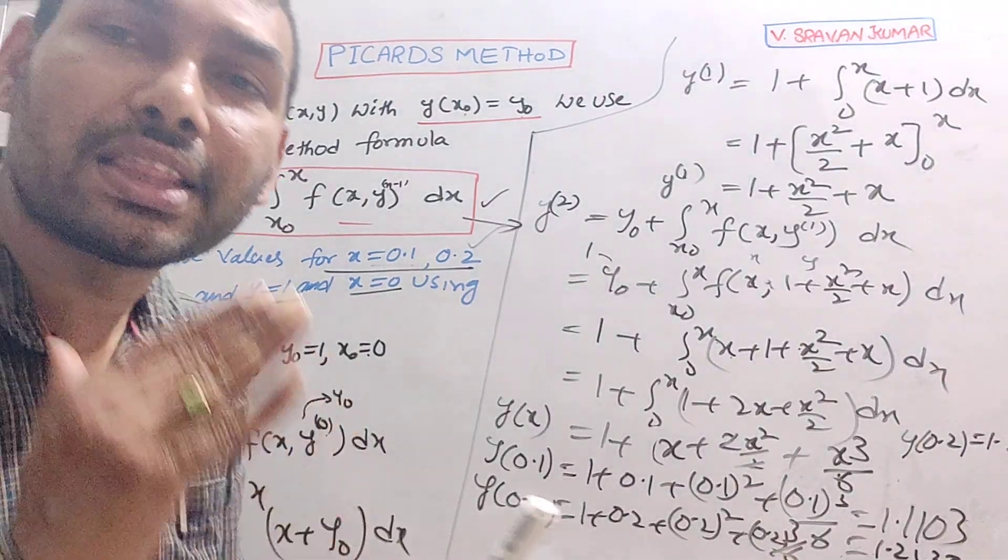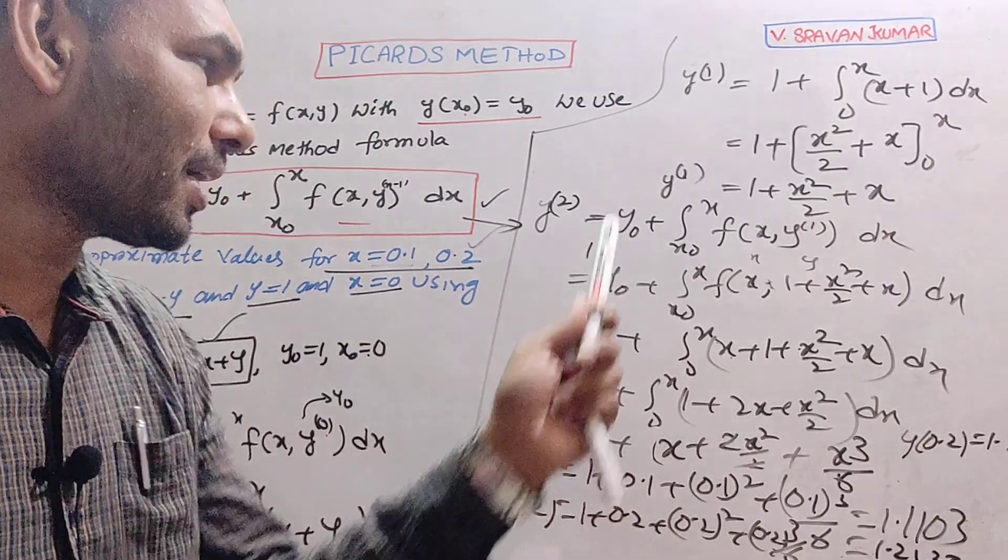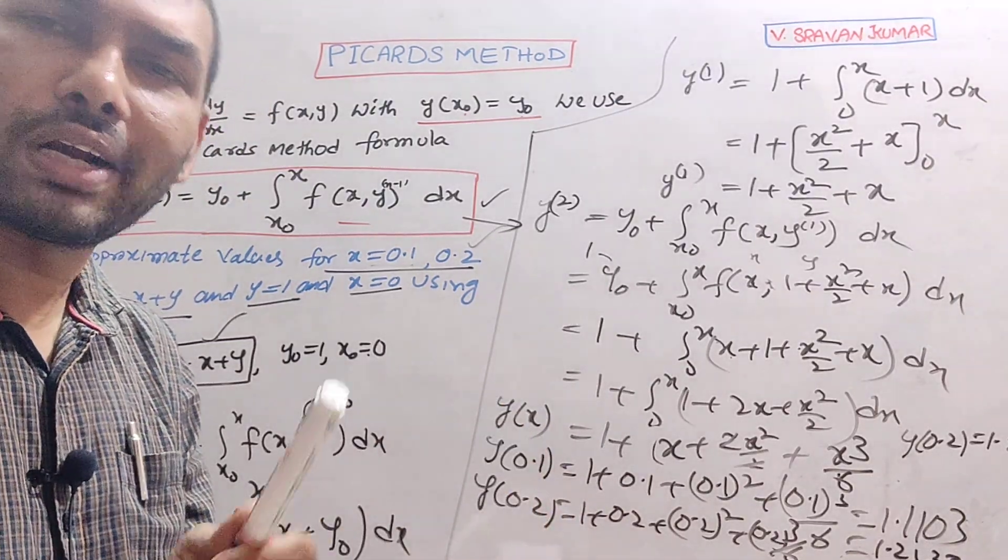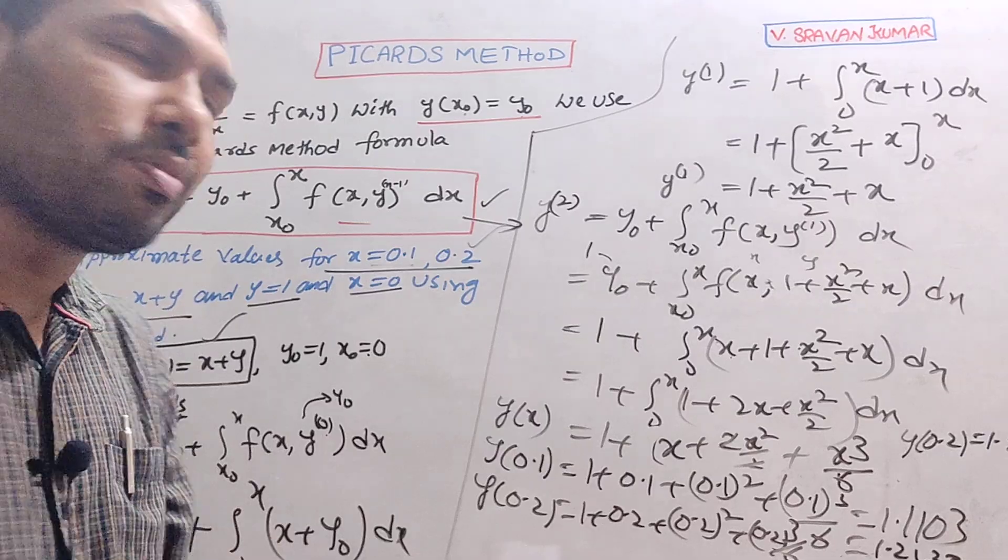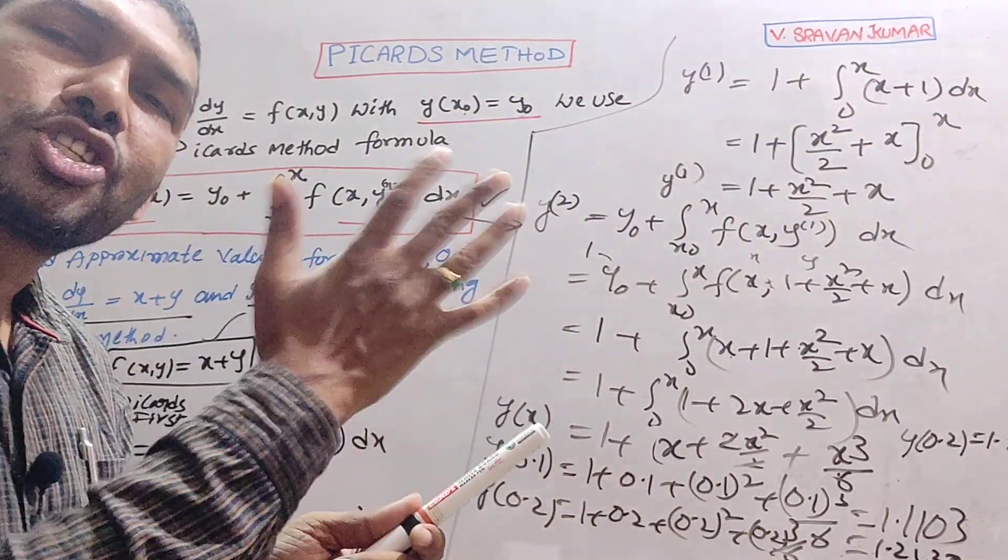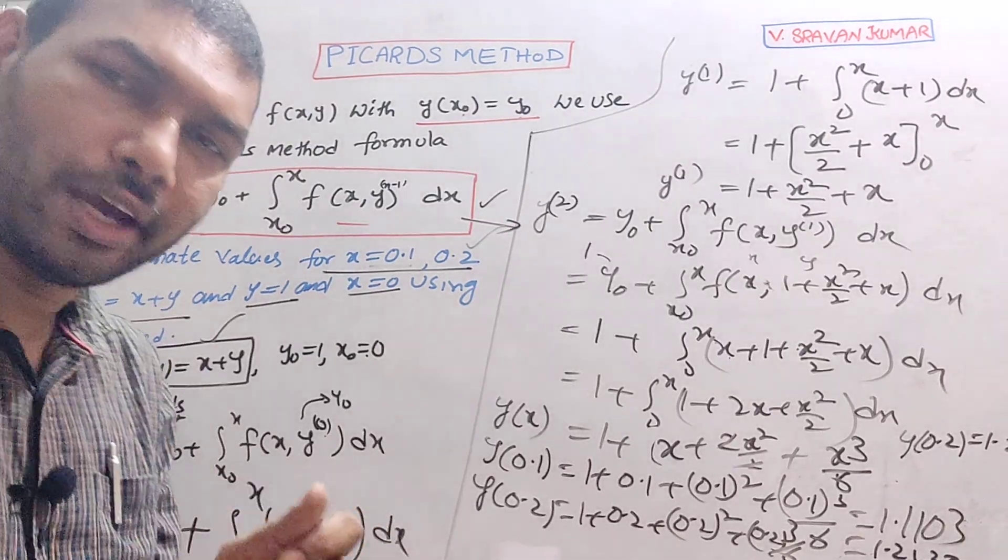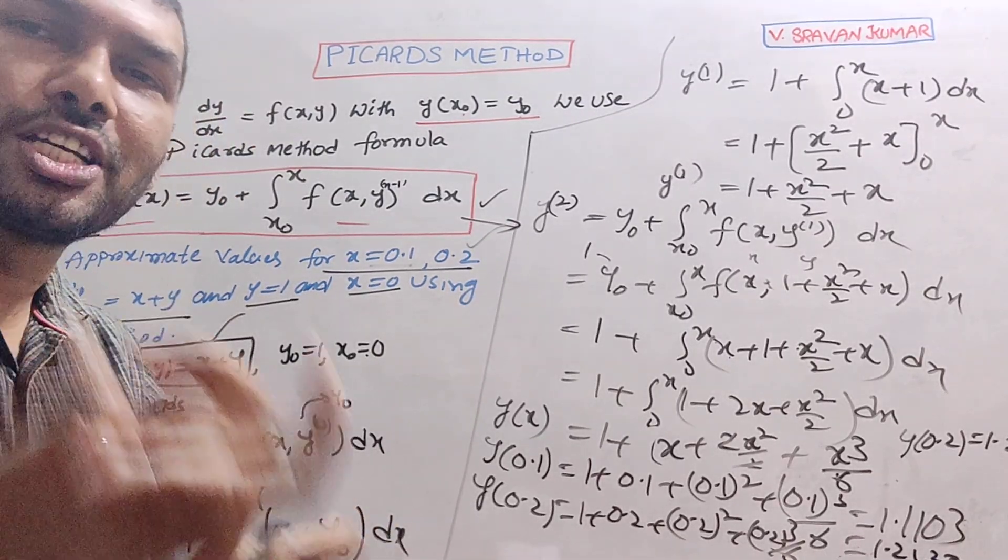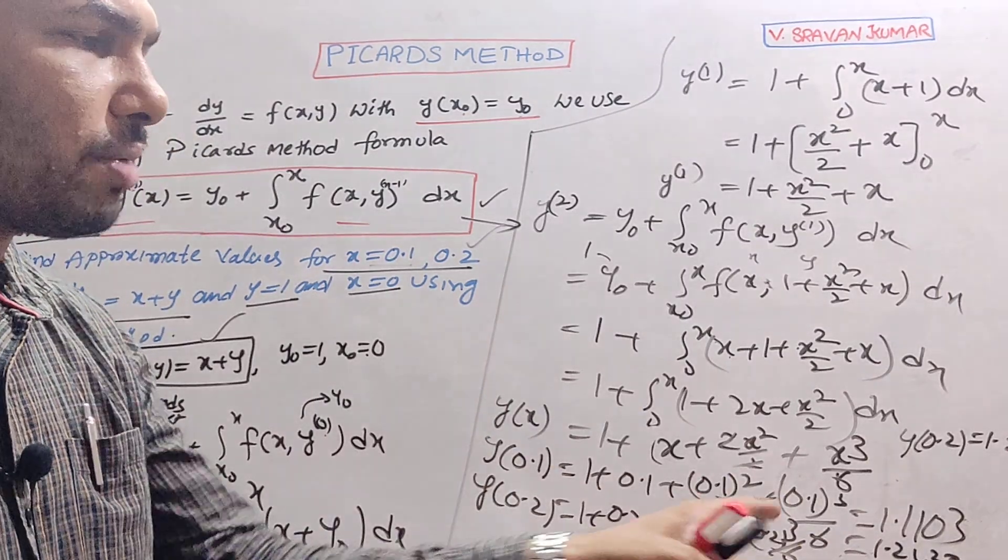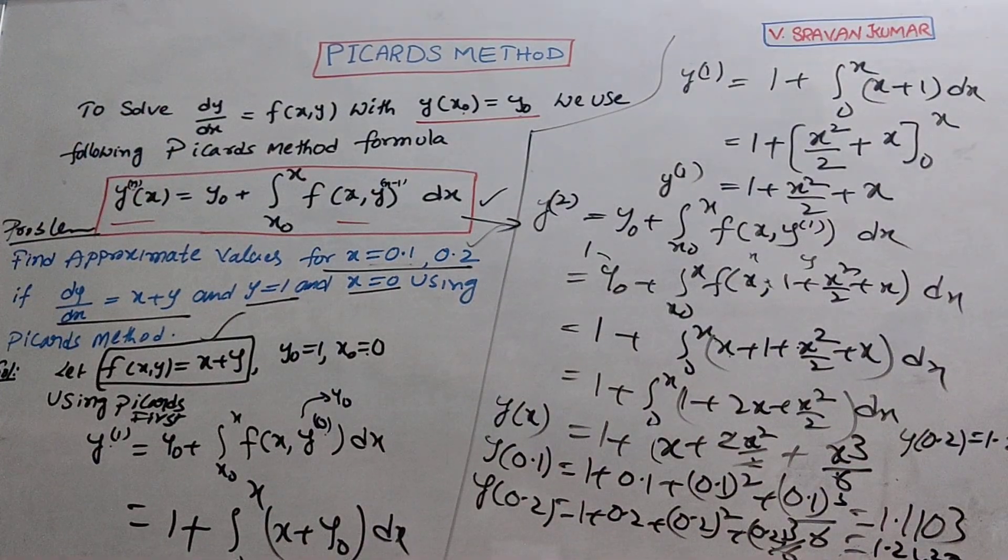So easy problem. All those integrations. Some problems, first approximation you can stop there. So approximations increase accuracy. Accuracy - 4 or 5 decimals I will try to truncate, minimum 3 maximum. It's clear? It's easy to use the Picard's method.